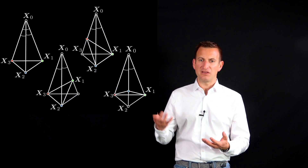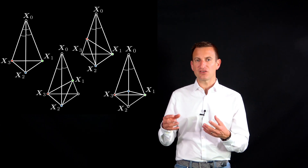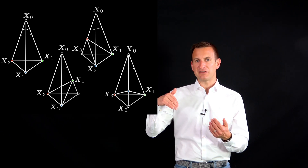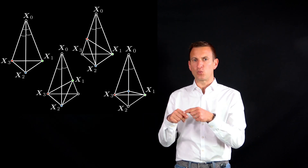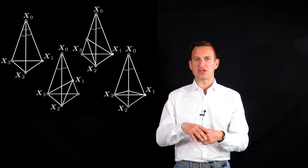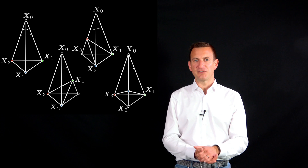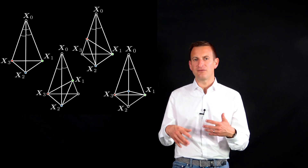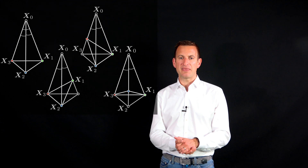With three points, you may end up with four different solutions. You can actually visualize them by looking at these four different tetrahedrons. If you rotate the lower triangle around one side, you can generate a second solution. These are the four possible solutions, for which you need a fourth point in order to disambiguate them.